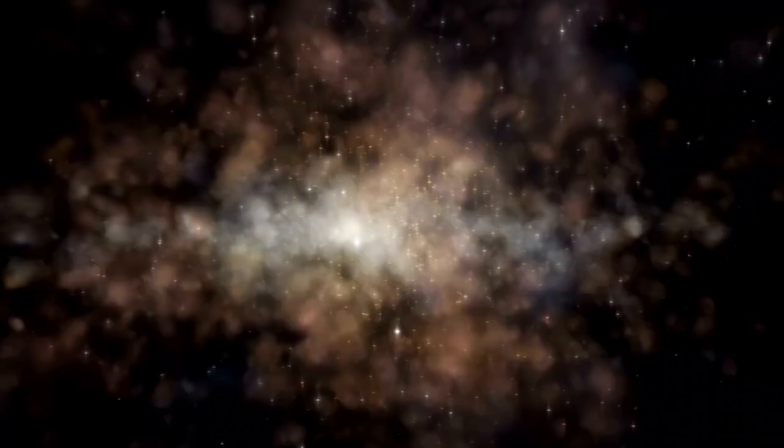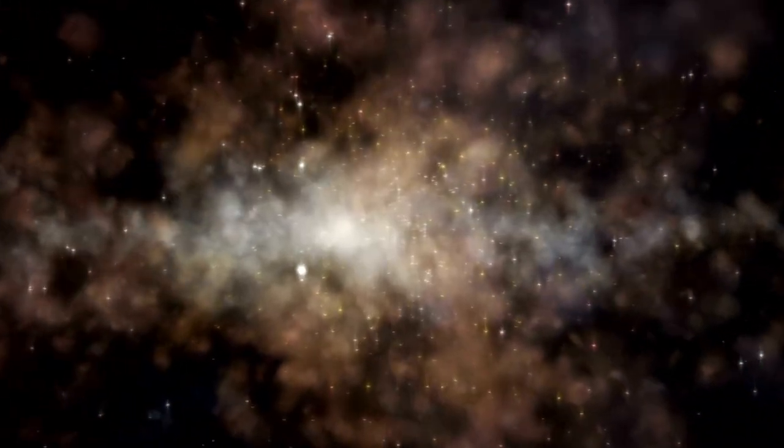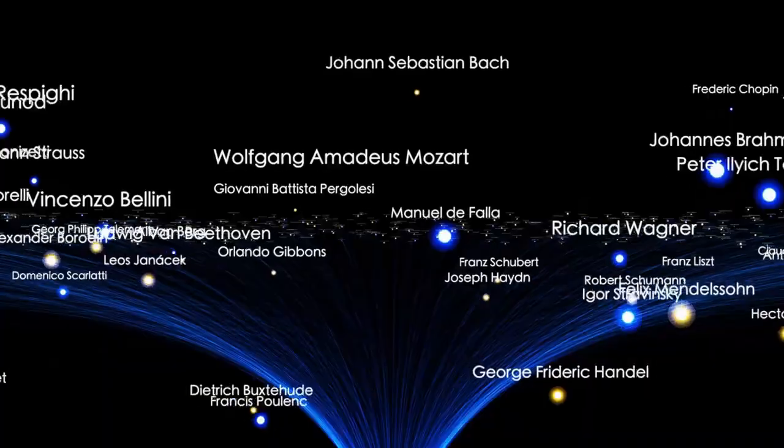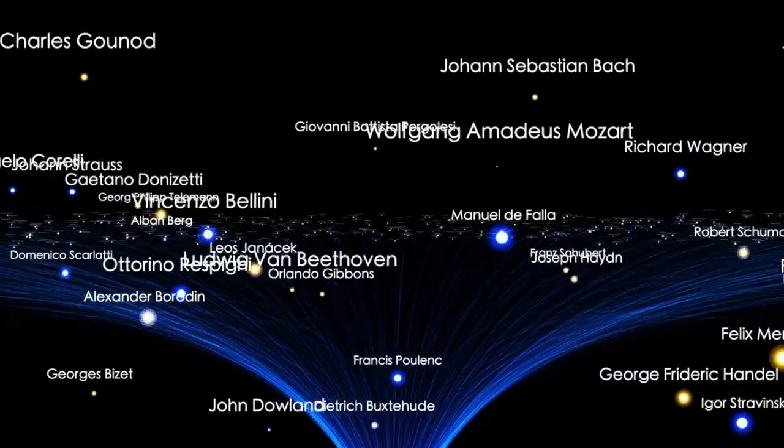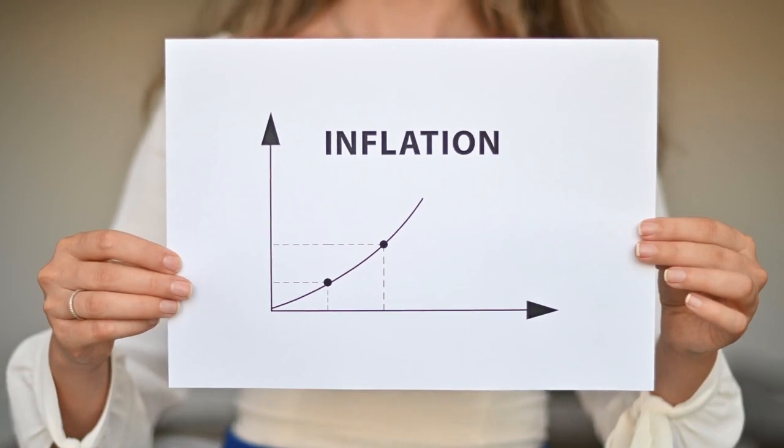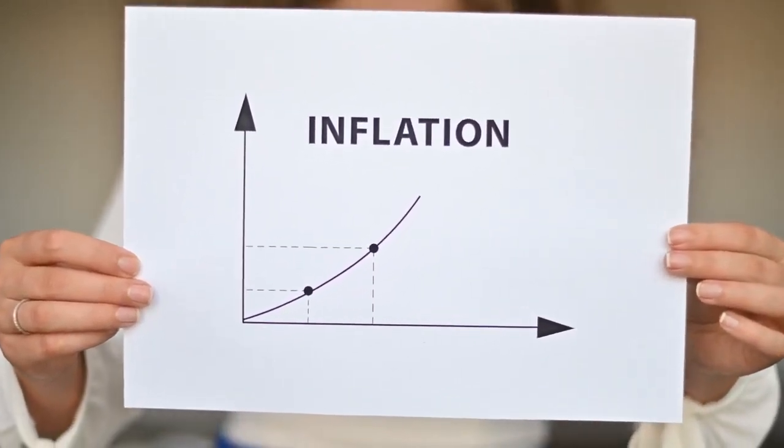One might wonder how the observable universe can be larger than the age of the universe in light years. The answer lies in the fact that the universe has been expanding ever since the Big Bang. Space itself is stretching, causing galaxies and other objects to move farther away from us over time.